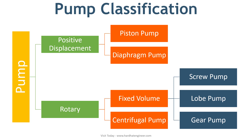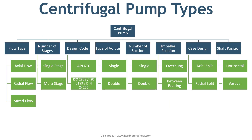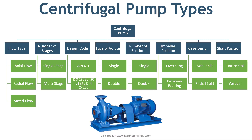There are multiple ways to classify the centrifugal pump. Different types are used in the industry based on requirement. They are classified based on design code, impeller type, number of impellers, applications, and so on. This chart covers the most common ways to organize these pumps. One thing to keep in mind is that the same pump can be part of two or more groups. For example, the pump shown here is a single stage, radial flow, single volute, single suction type.